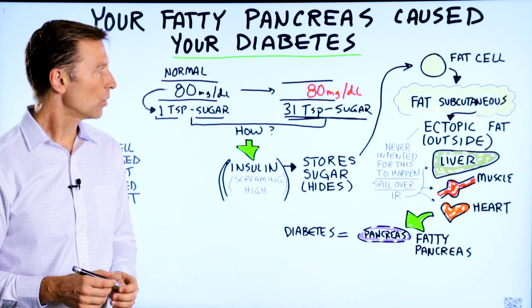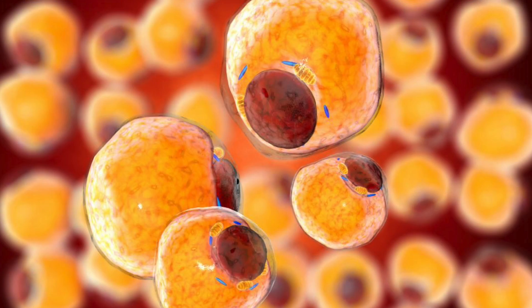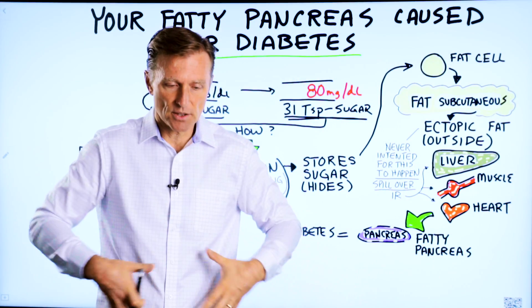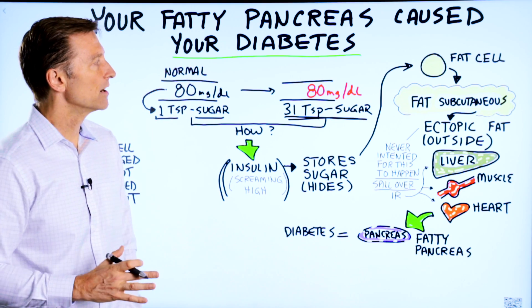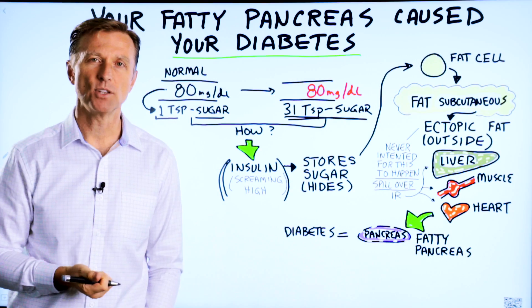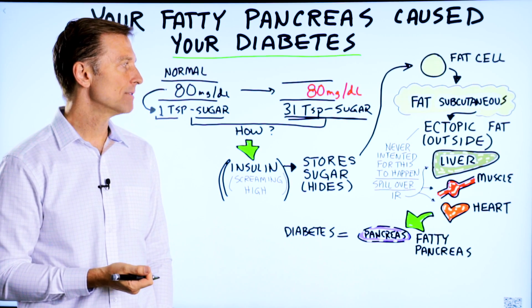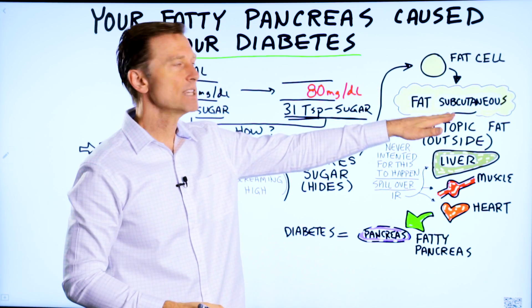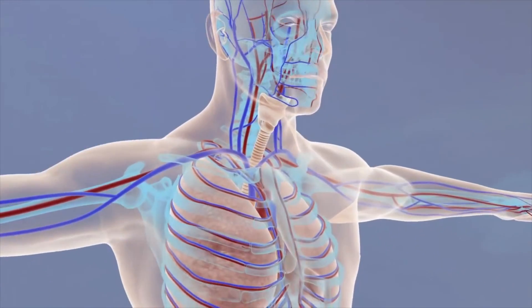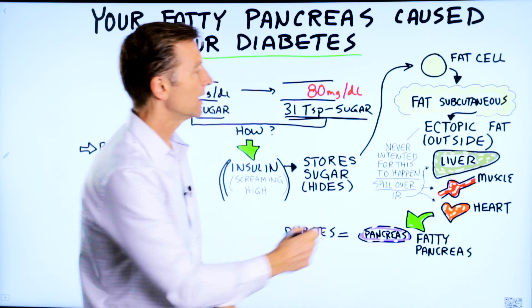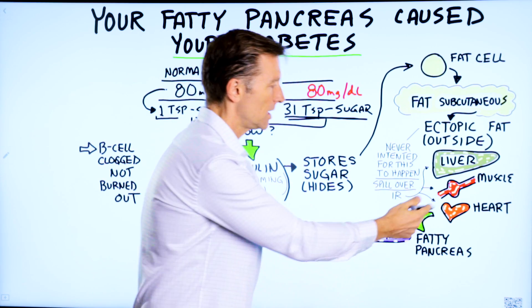What does insulin do with all that sugar? It has to put it somewhere. First, it converts it into fat cells. Then it starts putting it into what's called subcutaneous fat — the superficial layer of fat just beneath your skin. There's quite a bit of surface area for your body to store fat that way. But over time, you start developing what's called ectopic fat, which is fat outside the fat cell and outside the subcutaneous fat. Your body was never designed for this — we're talking about fat now being stored in the liver, then in the muscles, and then in the heart.